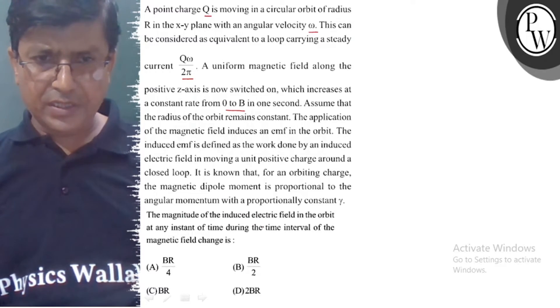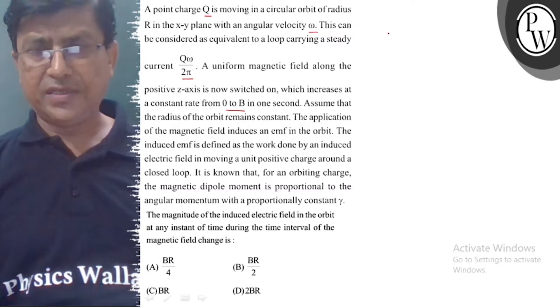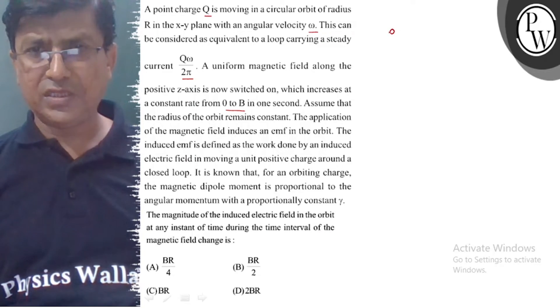The magnitude of the induced electric field in the orbit at any instant of time during the time interval of the magnetic field change is: we know that the induced EMF is ε = -dΦ/dt.